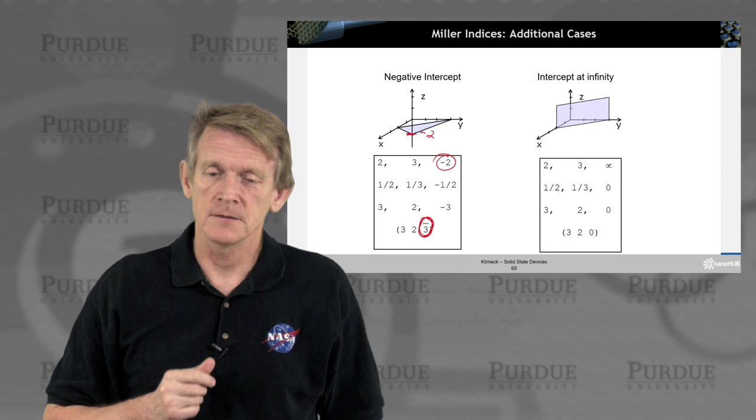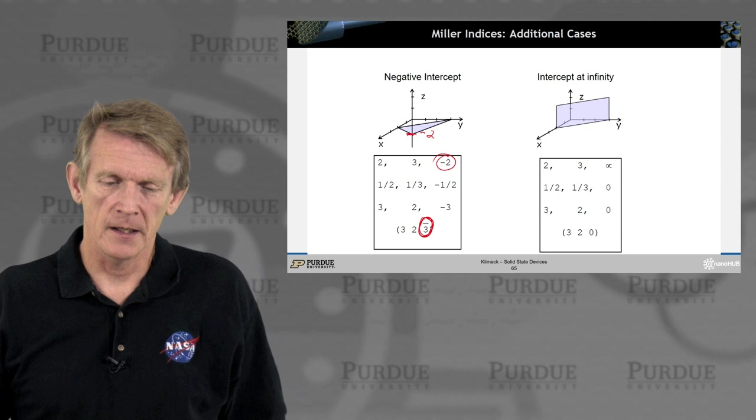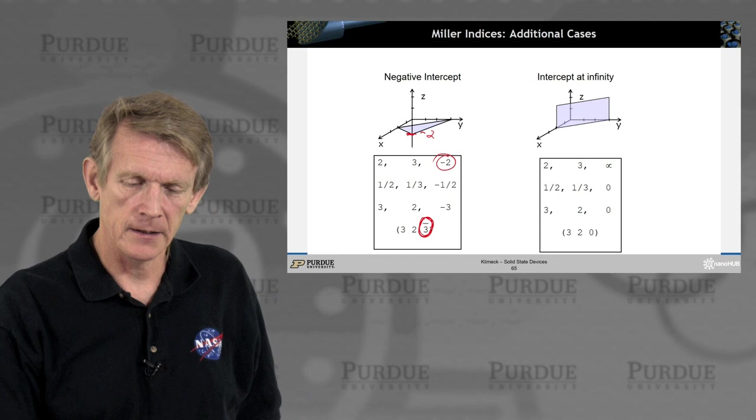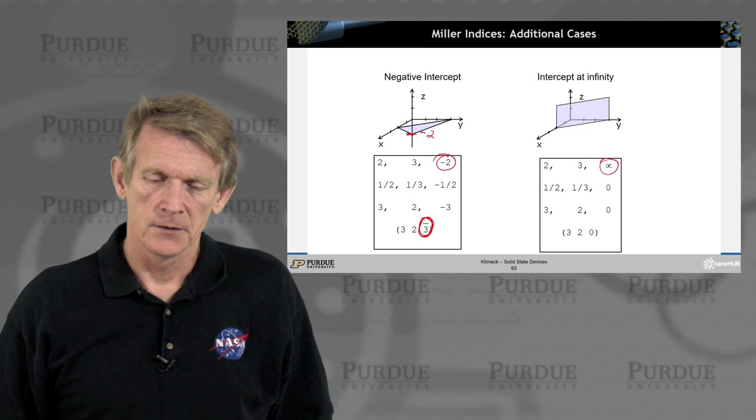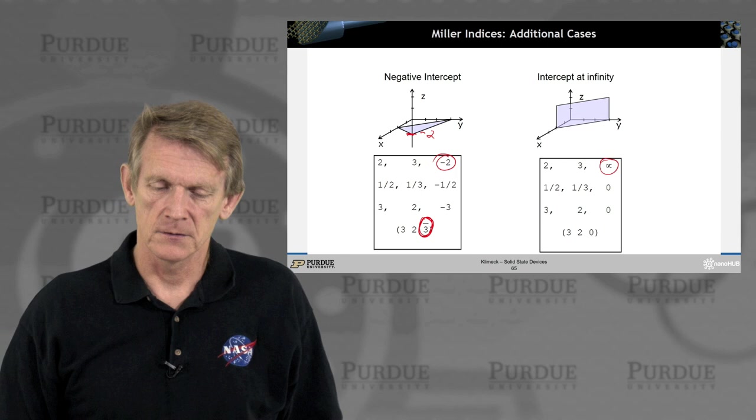So you could have another case where your plane is running parallel to one of these axes of your bases. And here, again, in the cubic one, you might have one that runs parallel to z. So mathematically, the intercept of this plane here with z is at infinity. So of course, a concept. So now you can rationalize it. The common denominator with infinity you don't worry about. So again, it's a 6 here.